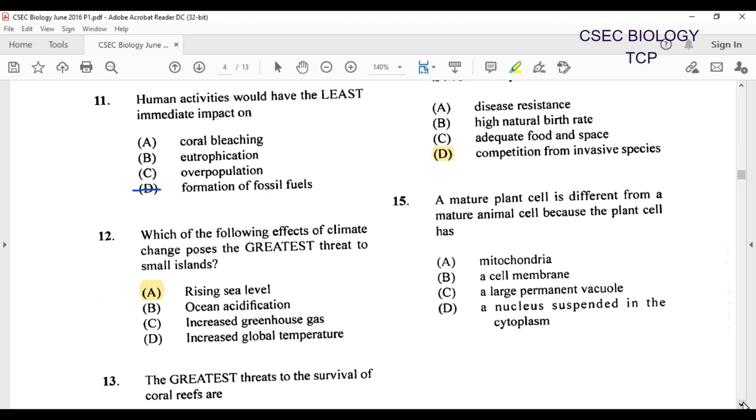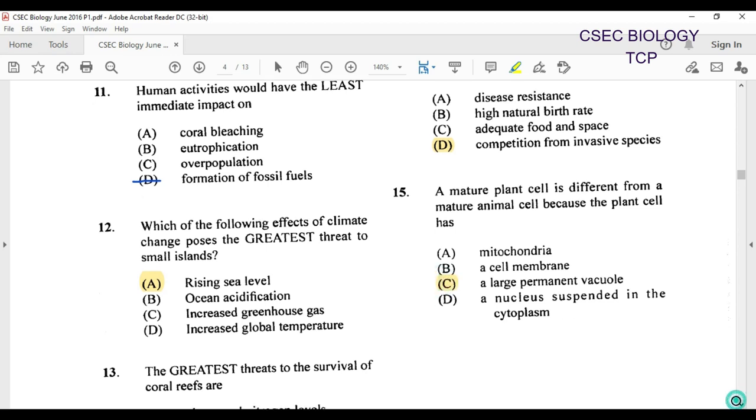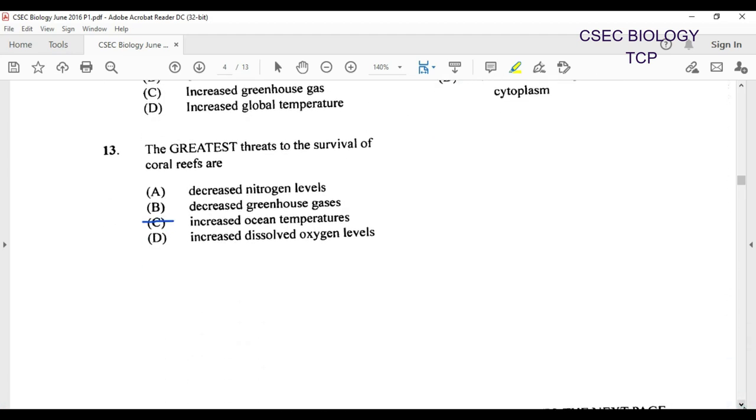We're at question number 15. A mature plant cell is different from a mature animal cell because a plant cell has what? Both would have mitochondria, both would have cell membrane. So our answer here would most definitely be large permanent vacuole because that is pretty much consistent with a plant cell and not an animal cell. The animal cells tend to have smaller vacuoles but not a large permanent vacuole.